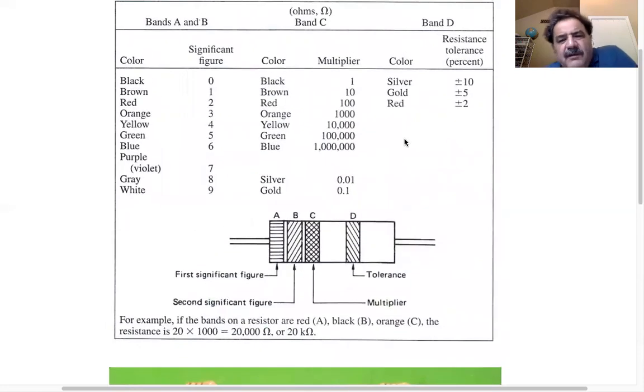That's the tolerance, if it's silver, those are 10% resistors, if they're gold, they're 5%, if they're red, they're 2%.